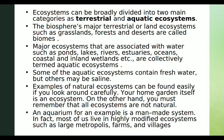Terrestrial ecosystems include regions called biomes — desert, grassland, and forest. Water-related ecosystems include ponds, lakes, and rivers, which we call aquatic ecosystems. We also classify saline or seawater ecosystems (oceans) and freshwater ecosystems.